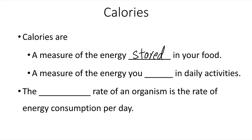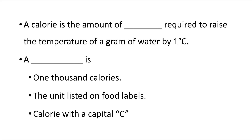Calories can also be used as a measure of energy you expend in daily activities. The metabolic rate of an organism is the rate of energy consumption per day. A calorie is the amount of energy required to raise the temperature of a gram of water by one degree centigrade — this is calorie with a lowercase c. A kilocalorie is 1,000 lowercase calories. Kilocalories are the units listed on food labels, and they are sometimes also listed as Calorie with a capital C, so a capital-C Calorie equals 1 kilocalorie.